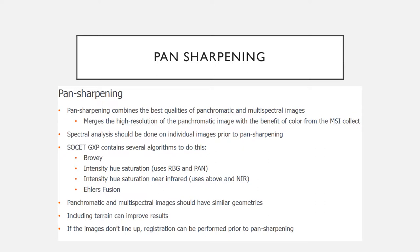Pan sharpening combines the best qualities of panchromatic and multispectral imaging — it merges the high resolution of the panchromatic with the colors from the multispectral. If you're going to do spectral analysis, you should do it before pan sharpening. Socket contains a bunch of algorithms to do this: IHS, IHS near-infrared, and Ehlers fusion. Note that if your panchromatic and multispectral images don't line up geometrically, you can do a registration before pan sharpening.